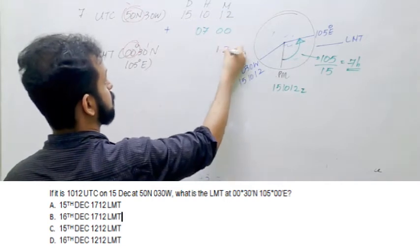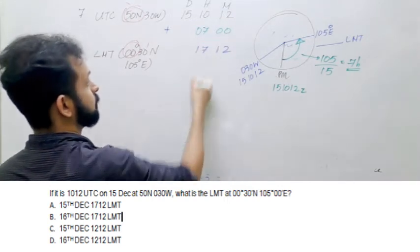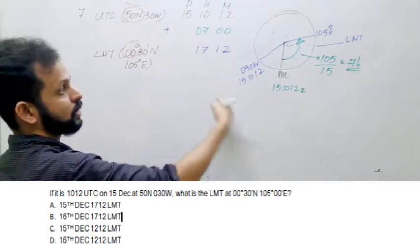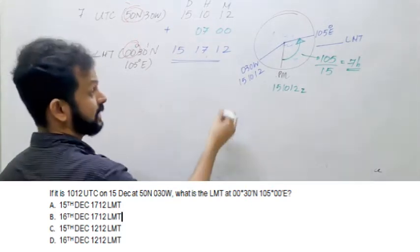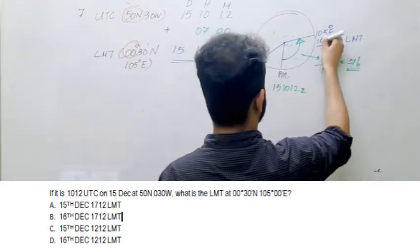So when you add it becomes 12, 7. And there is no date change. I am not crossing the IDL. Therefore it is going to be 151712. Those are the LMT.